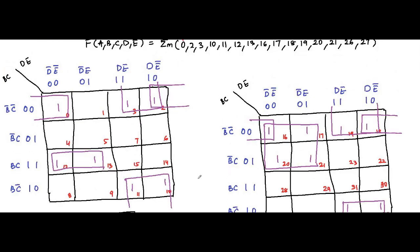We identify the common variables. For the quad involving cells 2, 3, 10, 11: on the horizontal side it is C-bar, and on the vertical side it is D — so the term is C-bar D. For the pair involving cells 0 and 2: the common variable is BC on the horizontal side and D-bar on the vertical side — so the term is BC D-bar. For the pair involving cells 12, 13: the common variable is B-bar C-bar on the horizontal side and E-bar on the vertical side — so the term is B-bar C-bar E-bar.